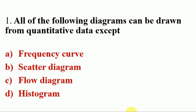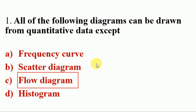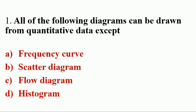First question. All of the following diagrams can be drawn from quantitative data except — Options A. Frequency Curve, B. Scatter Diagram, C. Floor Diagram, D. Histogram. Answer is C. Floor Diagram. The rest of the options — Frequency Curve, Scatter Diagram, and Histogram — are used to present quantitative data. Detailed explanations regarding these graphic presentations are included in the previous videos.